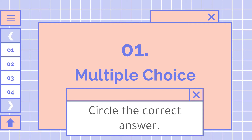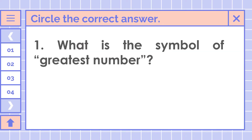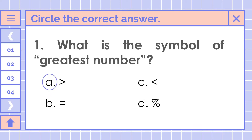For Part 1, we have multiple choice. Here, we're going to circle the correct answer. Let's start with number 1: What is the symbol of the greatest number? Is it letter A, letter B, letter C, or letter D? The correct answer is letter A. Good job! Who got the correct answer? Very good!